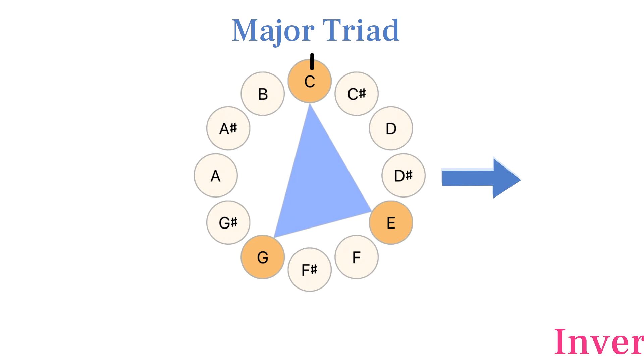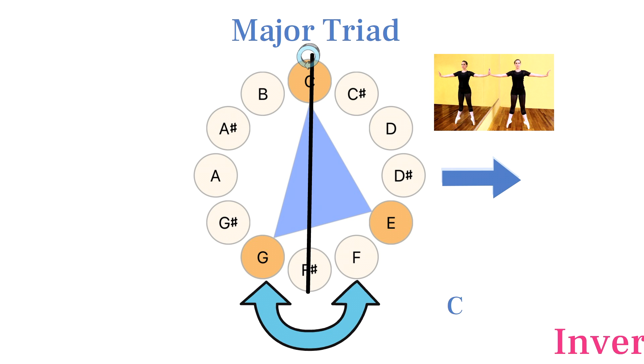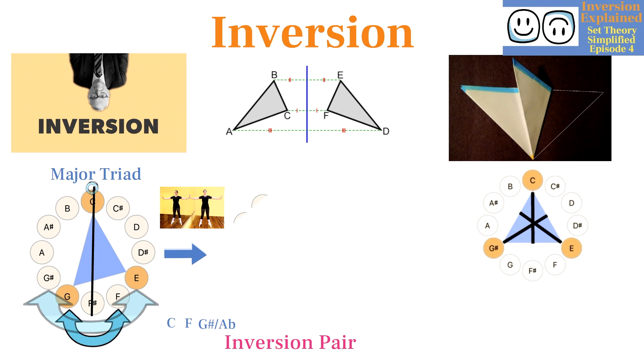To invert a set, we draw an axis through the middle of the pitch circle, and we move the pitches to their mirrored locations on the other side of the axis. Pitches on the line like C stay put. Since G is one step to the left of the axis, it will be mirrored on the other side one step to the right of the axis, and E will be mirrored two steps away. This gives us an F minor chord.